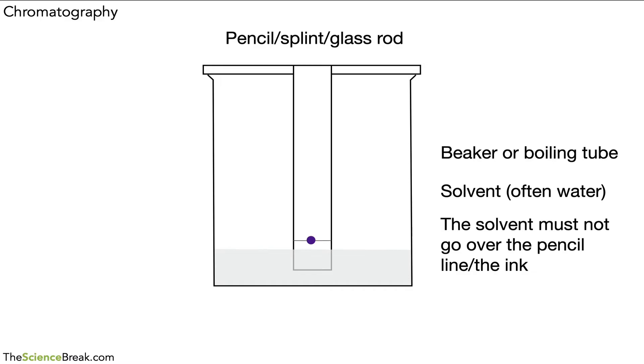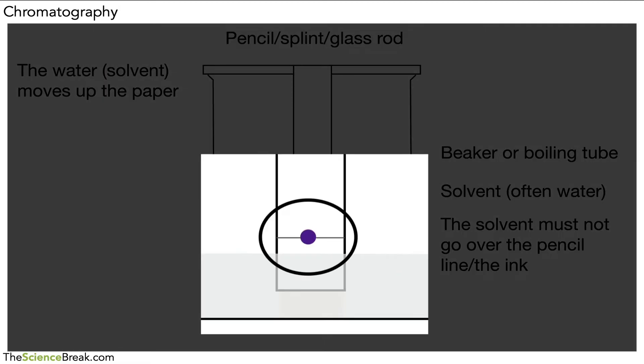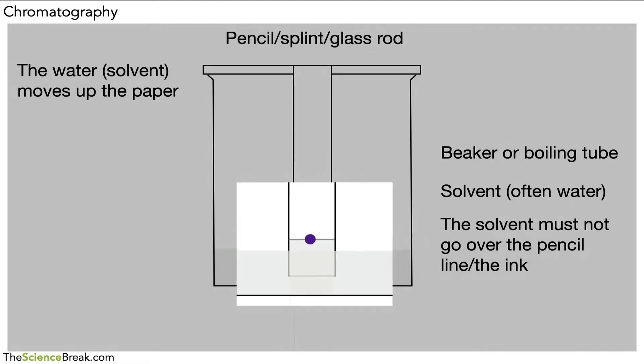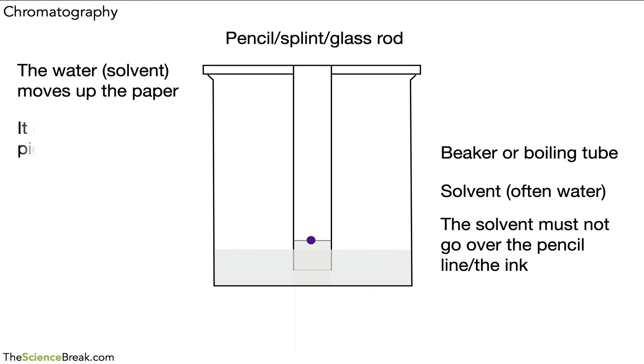We have our pencil line with our ink spot just slightly above the solvent, and then we can allow the chromatography to happen. The way this works is that the water will move up the chromatography paper. If you look there, we can see the water just slightly starting to move up. It will eventually reach our ink spot, and when it reaches our ink spot, it will dissolve the pigments in the ink spot. Once it does that, the pigments will move up with the water.